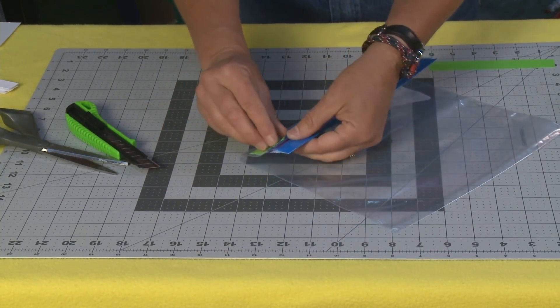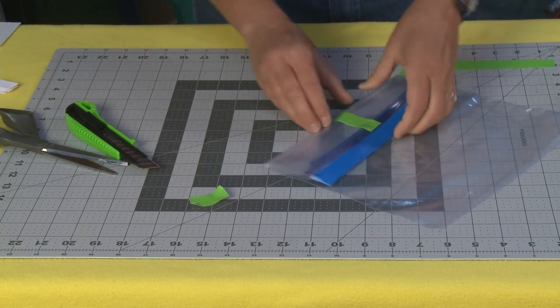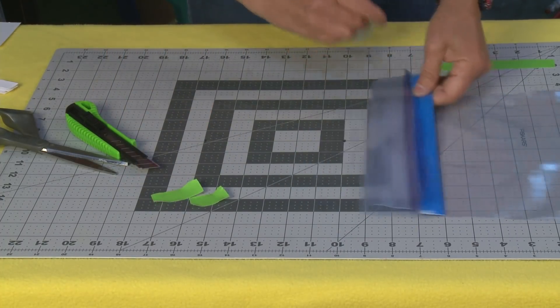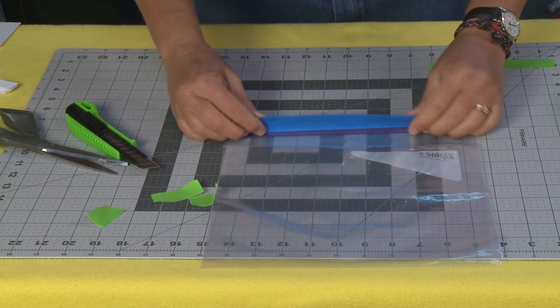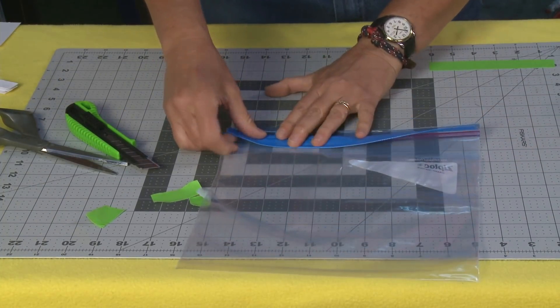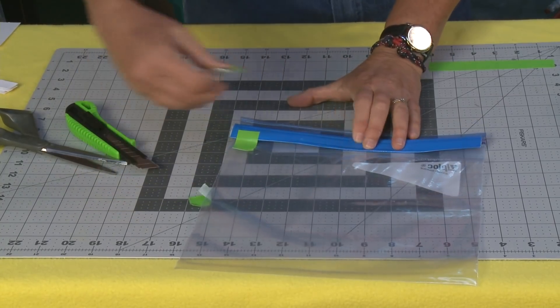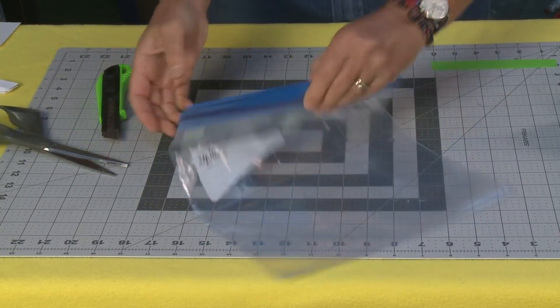Now peel these pieces of tape and repeat this process on the other side, folding down the piece that you've already done and sealing it with those pieces of tape. That gives us the top part.